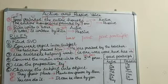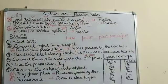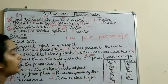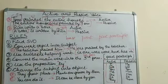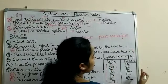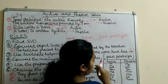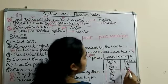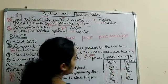The sixth and final step is to change the subject into the object. The object in the active voice becomes the subject in passive, and the subject in active becomes the object in passive — we interchange the positions. There is also a pronoun table: in passive voice, I becomes me, we becomes us, you remains the same, he becomes him, she becomes her, it remains the same, and they becomes them.